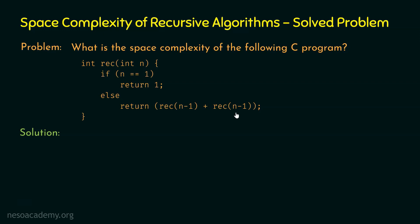This must be our focus. We do not have to worry about the value returned from this function. We must only be concerned about the flow of recursion, because in order to find the space complexity, we need to know the depth of recursion. The space complexity of a recursive algorithm equals the space required for any data structure plus the depth of recursion. In this program, we are not using any data structure, so the space complexity depends entirely on the depth of recursion.